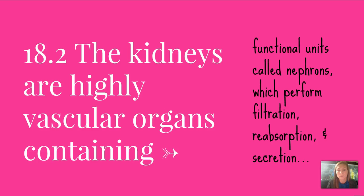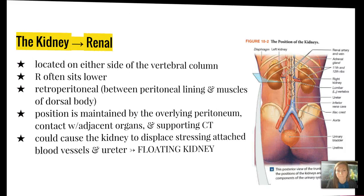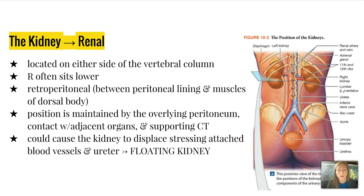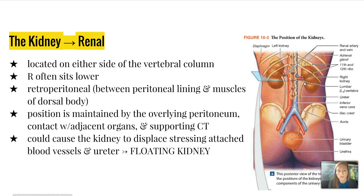The kidneys are highly vascular organs containing functional units called nephrons. These nephrons perform filtration, reabsorption, and secretion. Whenever we discuss something related to the kidney, we use the word renal. The kidneys are located on either side of the vertebral column; the right often sits a little bit lower. They are retroperitoneal — between the peritoneal lining and muscles of the dorsal body.